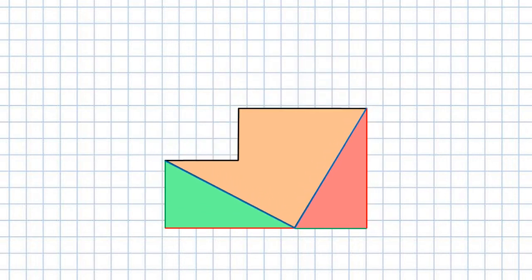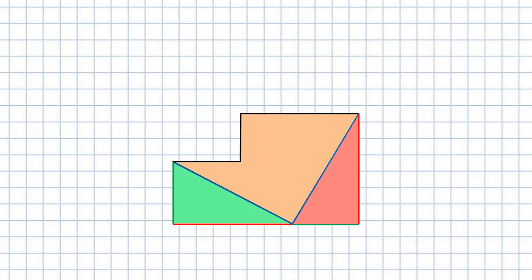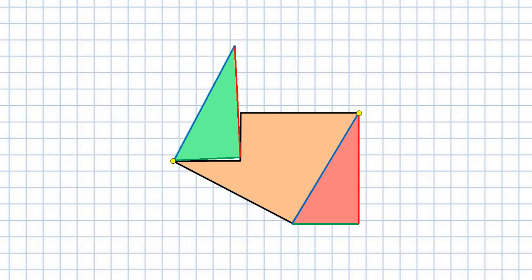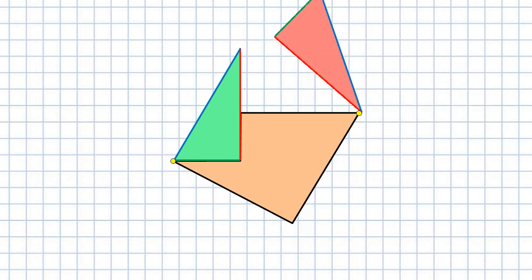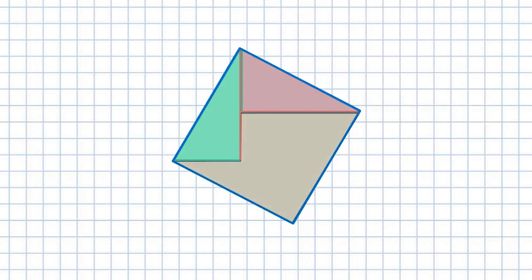Through a bit of geometric gymnastics, we can pivot the two triangles on their corners to nest perfectly within the irregular polygon to create a square with sides of length C and an area of C squared.